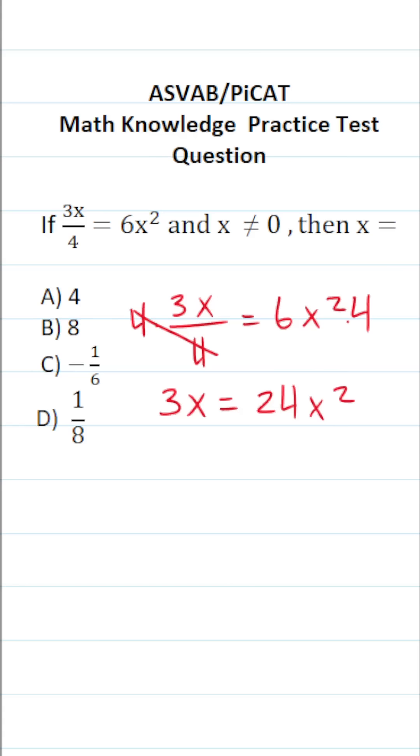When you solve equations, you try to get the letter variables on one side of the equation and everything else on the other side. So as my next step, I'm going to subtract 3x from both sides. In doing so, this crosses out, leaving me with 0 over here. This becomes 24x squared minus 3x.